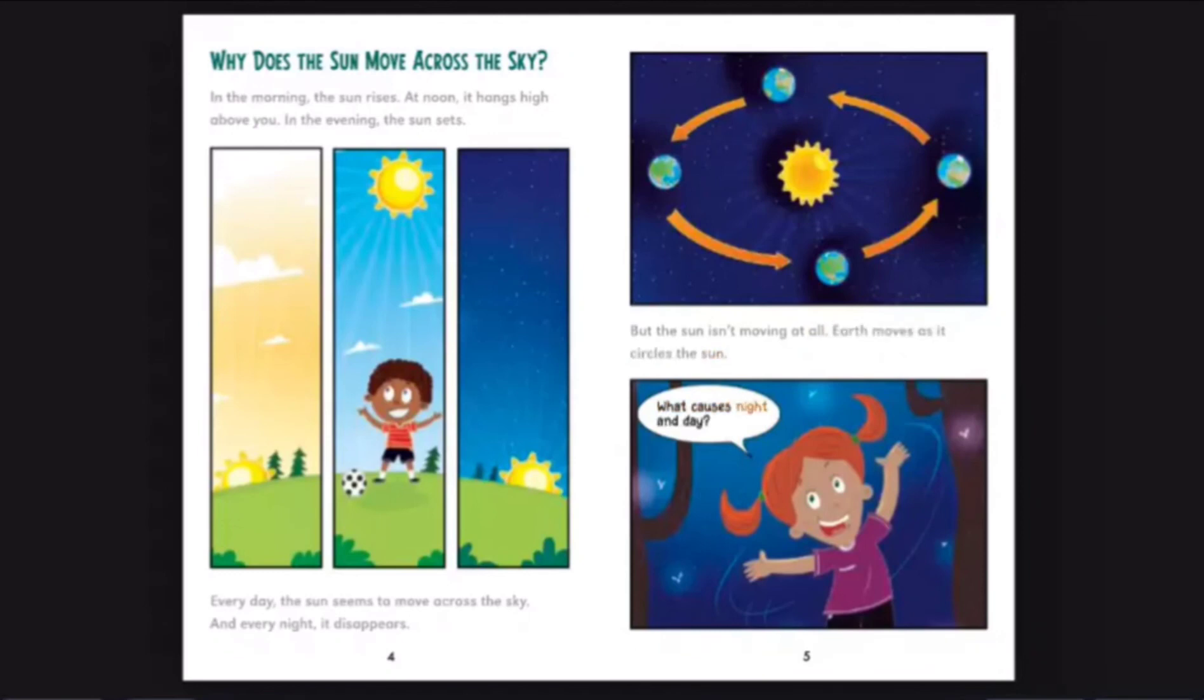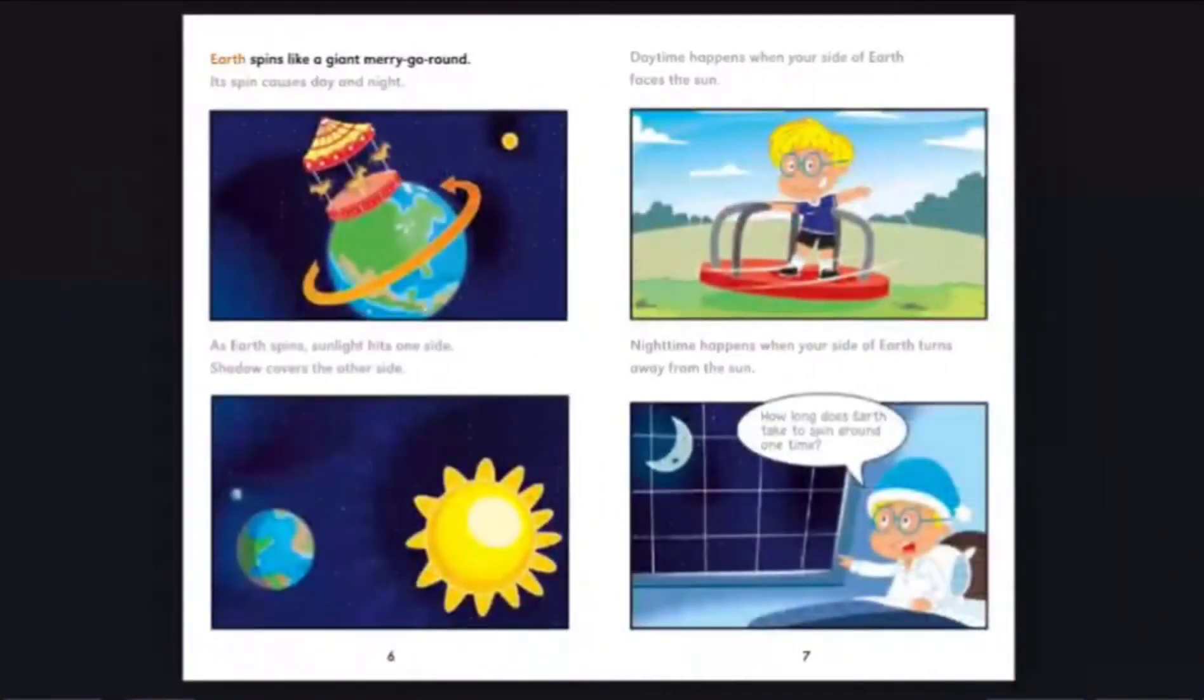What causes night and day? Earth spins like a giant merry-go-round. Its spin causes day and night. As Earth spins, sunlight hits one side. Shadow covers the other side.